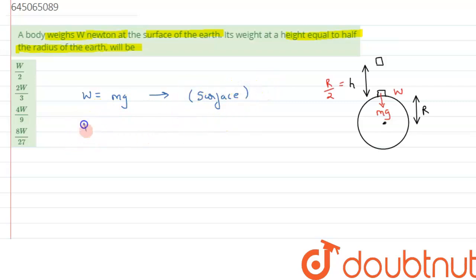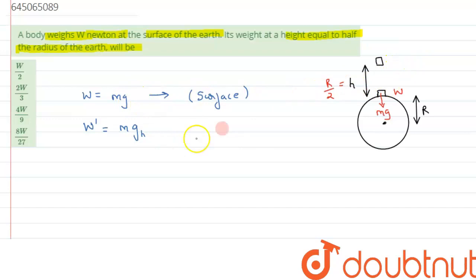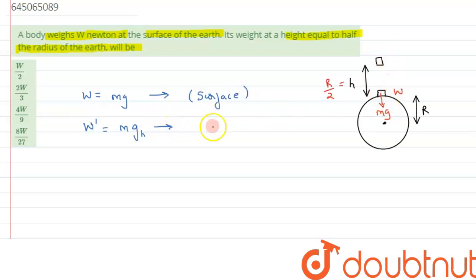Let's suppose the weight of the body at height h be W'. It can be given as mg_h, since mass remains constant but the acceleration due to gravity will change. As we go higher, at altitude, the value of g changes.